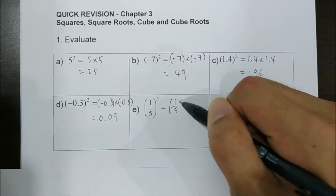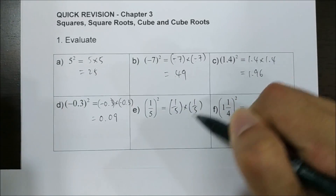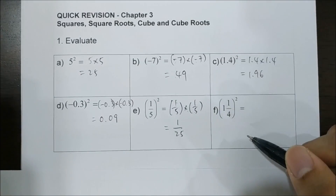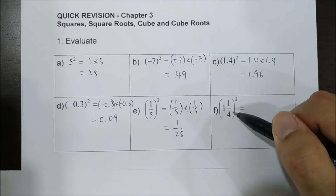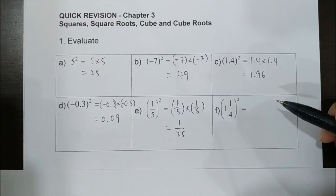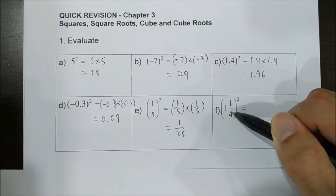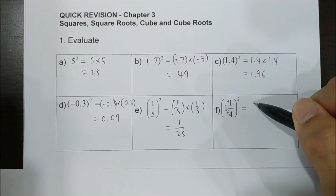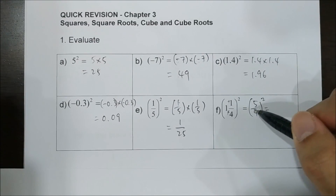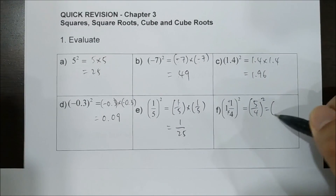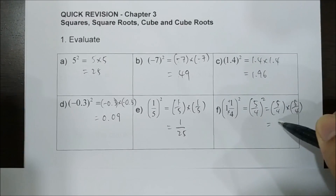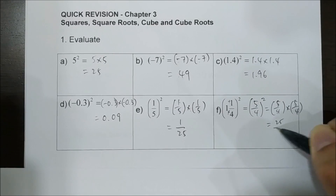1/5 squared means 1 over 5 times 1 over 5. You get 1 times 1 is 1, and 5 times 5 is 25, so the answer is 1/25. For the mixed number fraction, you need to change it to improper fraction. So 4 times 1 plus 1 is 5, giving 5 over 4. Squaring it means 5 over 4 times 5 over 4: 5 times 5 is 25, 4 times 4 is 16, so the answer is 25/16.